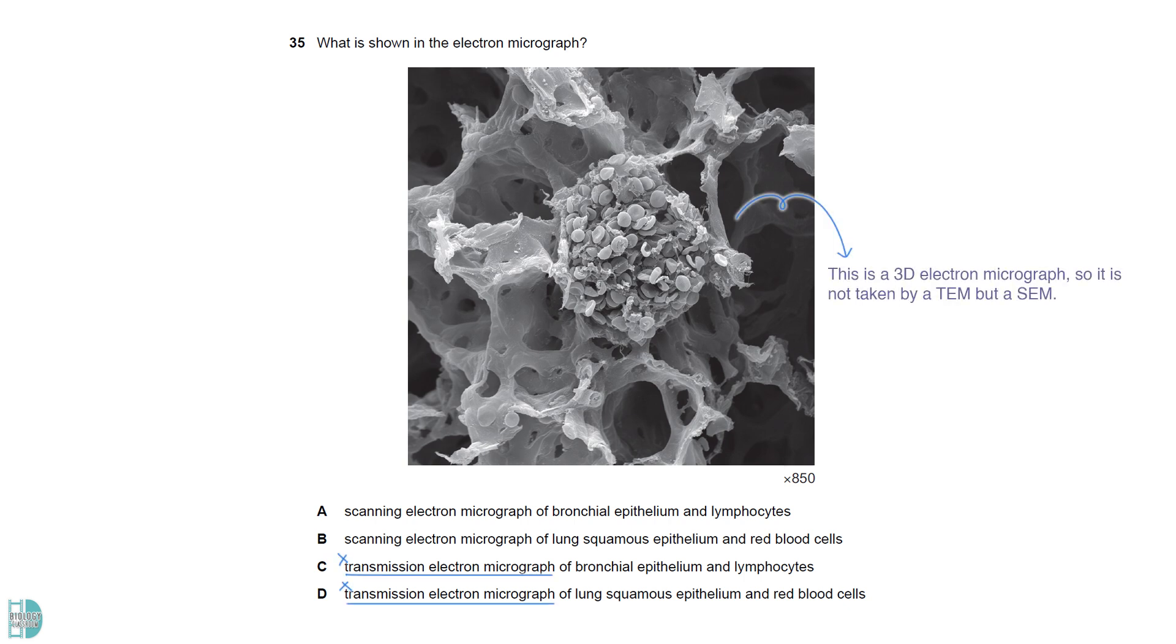This is a 3D electron micrograph, so it is not taken by a TEM. The biconcave cells in the center are the red blood cells. Those large spaces are the alveolar spaces. The cells lining the spaces are the squamous epithelial cells.